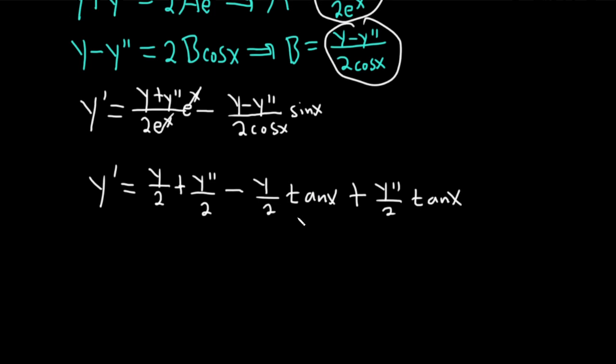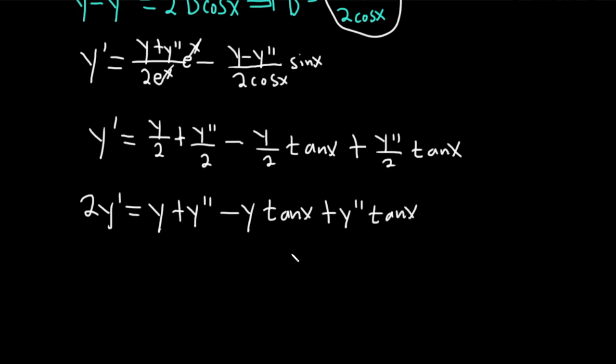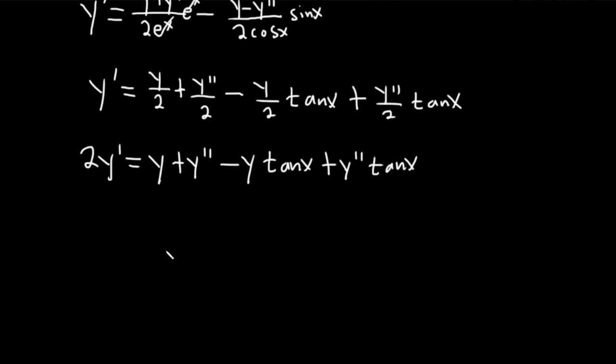So this is 2y prime equals y plus y double prime minus y tan x plus y double prime tan x. And let's go ahead and subtract this 2y prime. We want to set it equal to zero and clean it up, write it in a nicer way. So minus 2y prime.